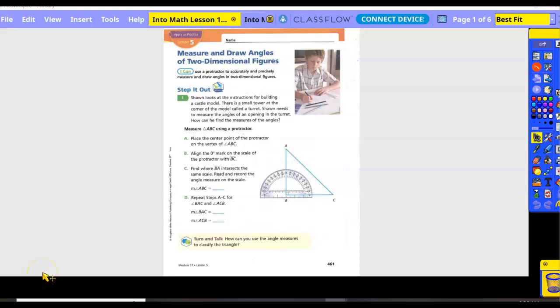Step it out, number one. Sean looks at the instructions for building a castle model. There is a small tower at the corner of the model called a turret. Sean needs to measure the angles of an opening in the turret. How can he find the measure of the angles? So they want us to measure angle ABC.